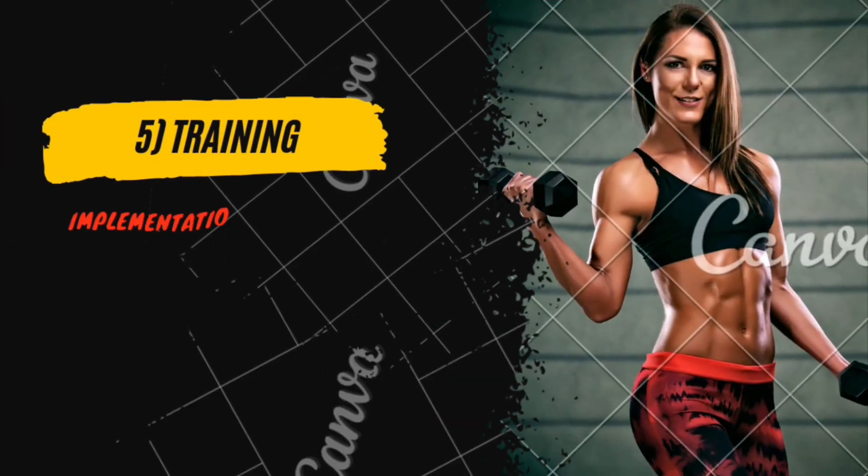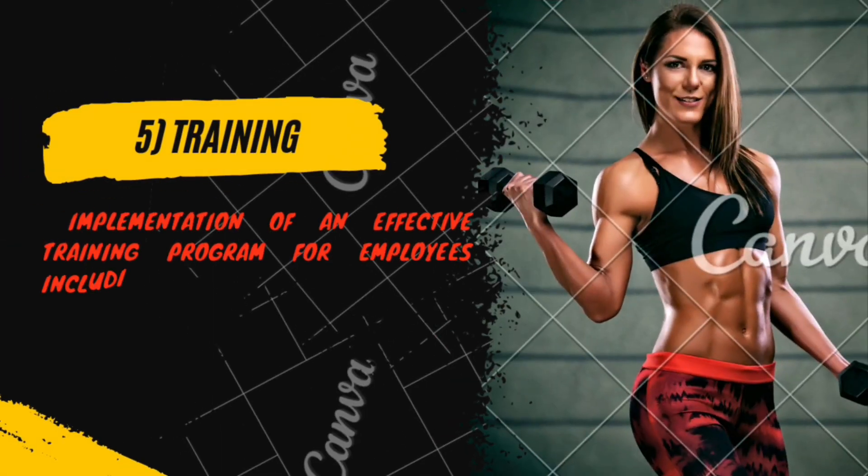Element 5 is employee training. Employees are provided effective training including standard operating procedures and process-related safety. The importance of the process is communicated through this training.